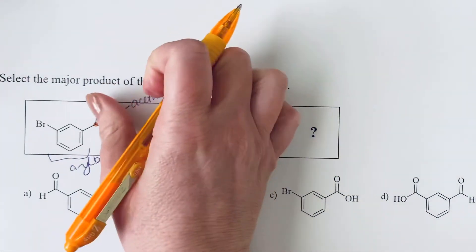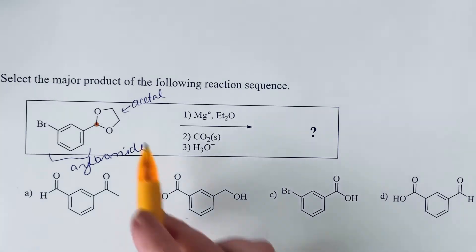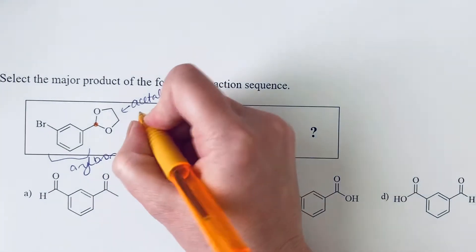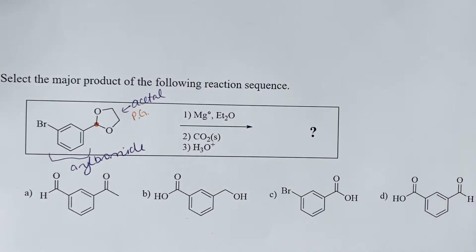And when you do the hydrolysis, you're going to cleave that off and make it back into a carbonyl. So we use acetals as protecting groups. So this is a protecting group. And specifically, this one is a protecting group for an aldehyde.